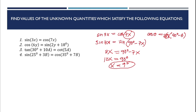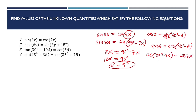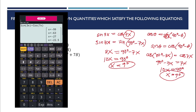Alternatively, we can change the sine side. The cofunction of sine theta is cosine of 90 degrees minus theta, so sine 3x becomes cosine of 90 degrees minus 3x. This gives cosine of 90 degrees minus 3x equals cosine 7x. Equating arguments: 90 degrees minus 3x equals 7x, so 10x equals 90 degrees, and x equals 9 degrees — same process, same result.